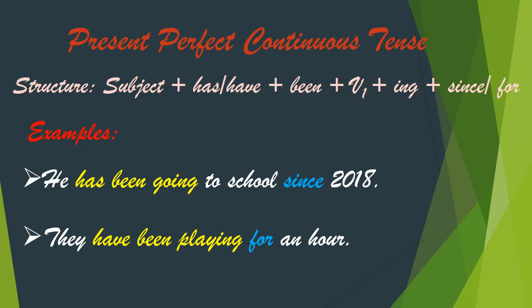Present perfect continuous tense is used to express duration, or how long. We use 'for' to denote a period of time — for an hour, a month, two years, several days, etc. We use 'since' to denote a point of time in the past — since morning, since evening, since noon.